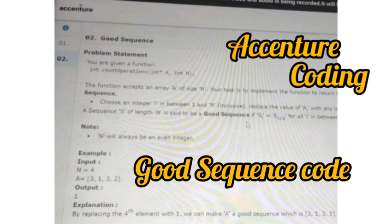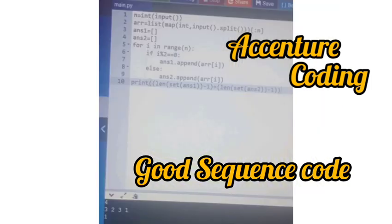So friends, let's discuss how to write the code. For writing the code, we use Python language. You have to choose Python and then write: n = int(input()), then array arr = list(map(int, input().split()))